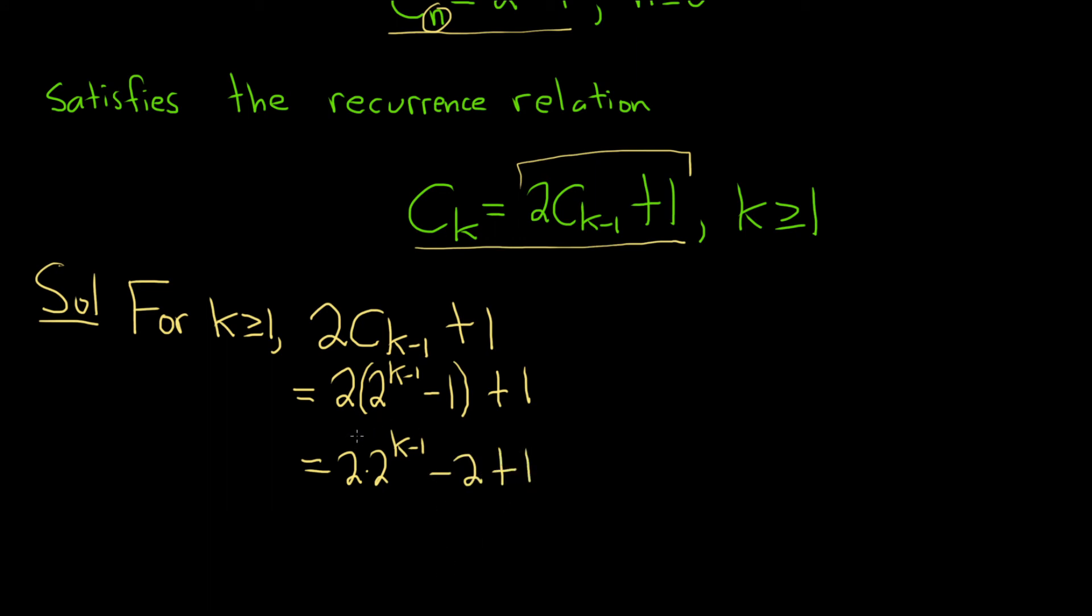Now 2 is really 2 to the 1. And so when you multiply 2 to the 1 times 2 to the k minus 1, you end up adding the exponents. So you get 2 to the k. And then minus 2 plus 1 gives us minus 1.